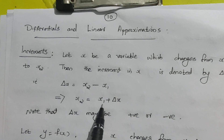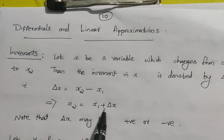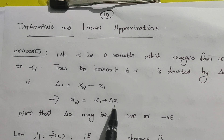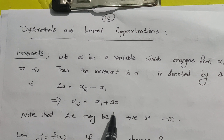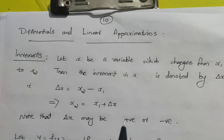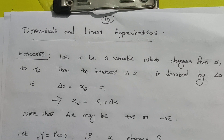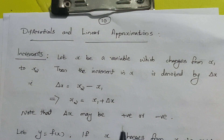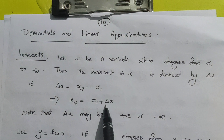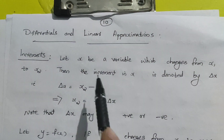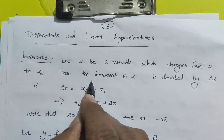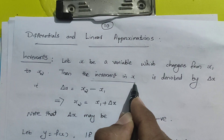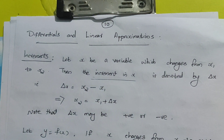Delta X can be positive or negative — it is the increment in X, the independent variable.